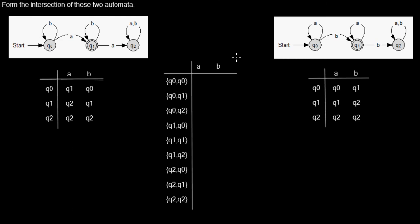Here will be the transition table of our new automaton. The states in this new automaton will consist of the cross product of both sets of states from the initial automata. So let's take the state named Q0,Q0 — it represents that we are in state Q0 in the first automaton and in Q0 in the second automaton. You just combine every state from one automaton with every state in the other.